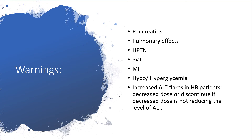It could lead to pancreatitis, pulmonary hypertension, supraventricular tachycardia, myocardial infarction, and hypo- or hyperglycemia. Increased ALT flares can occur in hepatitis B patients. In this situation, you have to decrease the dose or discontinue the medication if dose reduction is not reducing ALT levels, because ALT is giving a clue that there is liver injury, and persistent overwhelming injury will lead to liver failure.